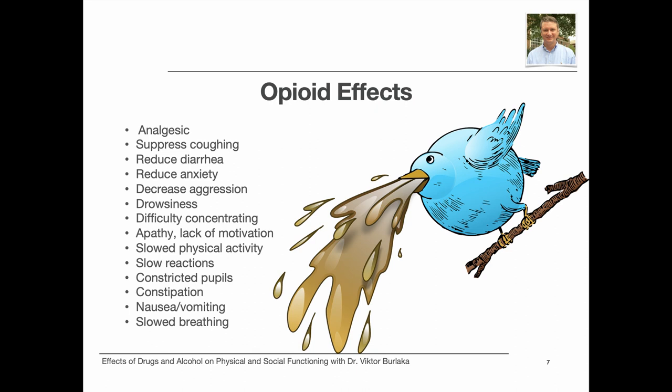Opioid medications are used medically for their ability to control pain, which is known as analgesic effect. They also help reduce coughing and diarrhea. Opioids also help with relaxation, reduce anxiety and aggression. Opioids also cause drowsiness, difficulty concentrating, apathy, lack of motivation, slowed physical activity, slow reactions, constricted pupils, constipation, nausea and vomiting, and slowed breathing.